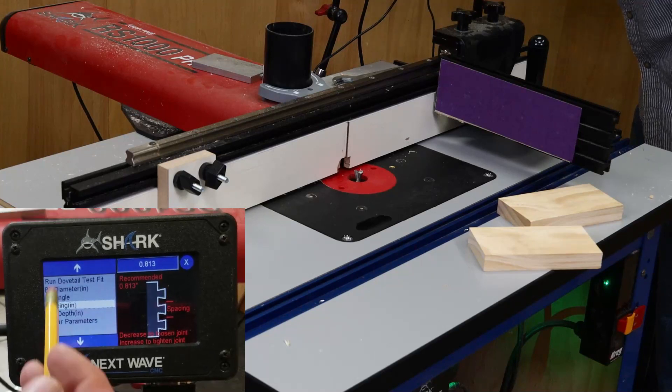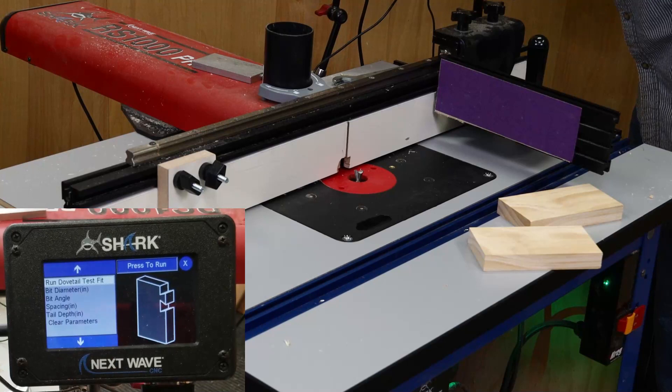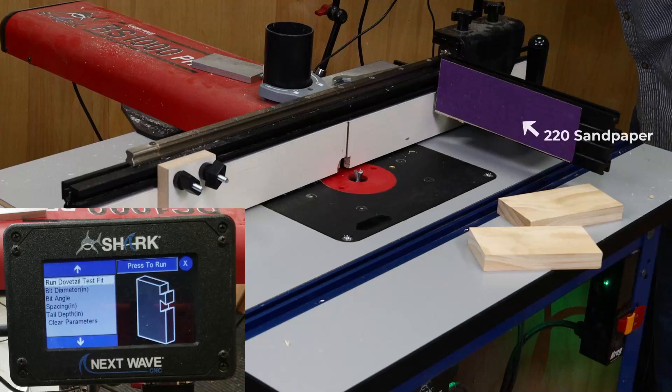The app is now set up and ready to run. For the Dovetail Test app, both boards need to be run end down and perpendicular to the fence. For this setup, I'm using the optional sliding miter fence accessory, but a shop-made table slide will also work. I've also added sandpaper to the fence to keep the board from slipping while routing.